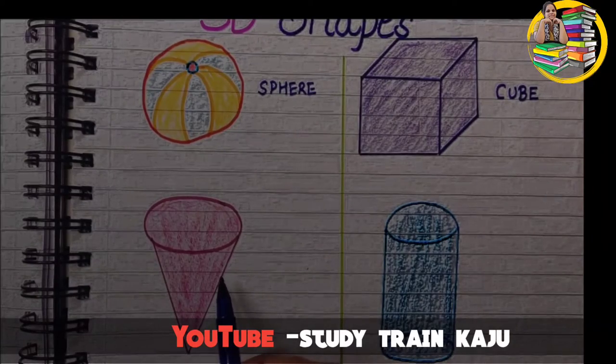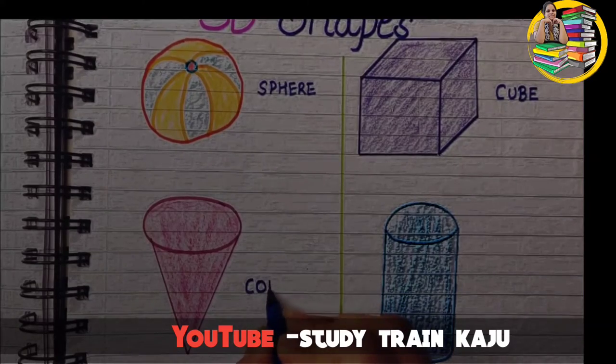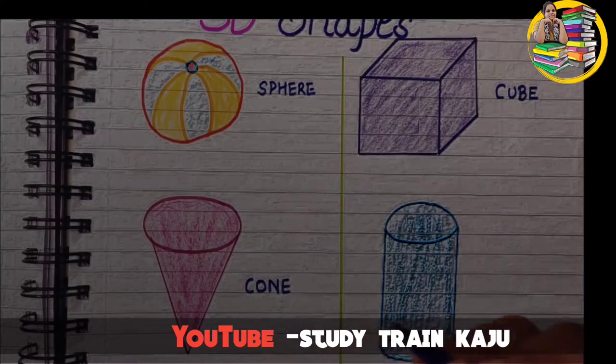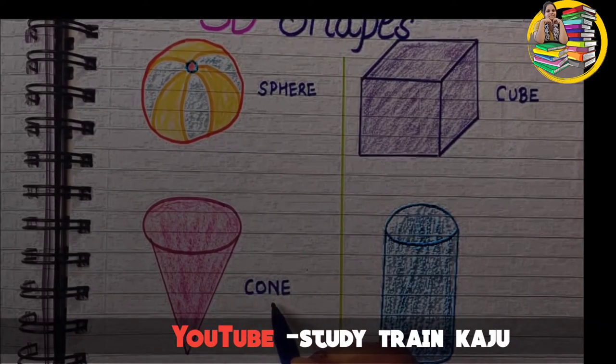The next shape is cone shape. C-O-N-E. Cone. This looks like an ice cream cone, hence it is known as cone shape.